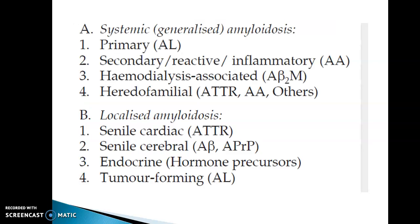Amyloidosis is classified as systemic or generalized amyloidosis, which includes primary AL type, secondary reactive inflammatory AA type, hemodialysis associated A-beta-2M, and heredofamilial ATTR and AA. Then we have localized amyloidosis: senile cardiac type ATTR, senile cerebral A-beta or APRP, endocrine type with hormone precursors, and tumor-forming AL type.